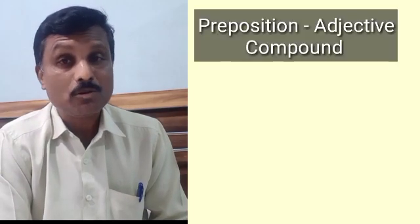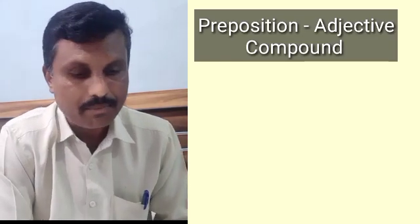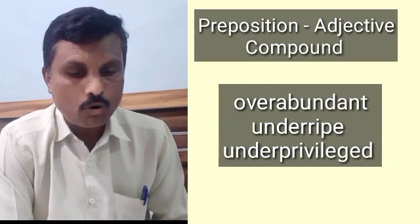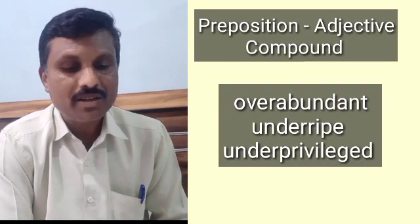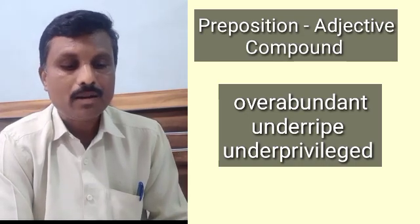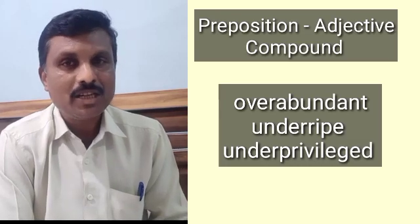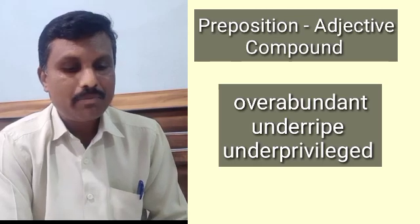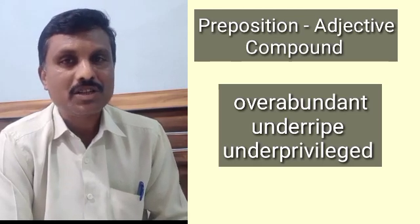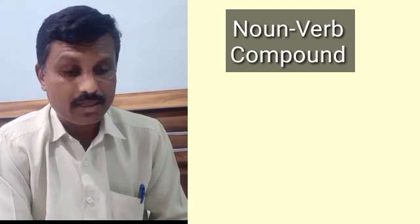There is also preposition-adjective compounding, where a preposition combines with an adjective to form a new word. For example, 'over' is a preposition and 'abundant' is an adjective — 'overabundant'. 'Under' is a preposition and 'ripe' is an adjective — 'underripe'. 'Under' with 'privileged' gives 'underprivileged'. This is the preposition-adjective compounding process.